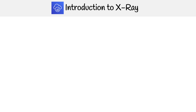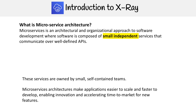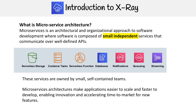To understand X-Ray, we need to understand what microservices are. Microservices is an architectural or organizational approach to software development where software is composed of small, independent services that can communicate over well-defined APIs. These are services owned by small and self-contained teams. Microservice architecture makes apps easier to scale and faster to develop, enabling innovation and accelerating time to market for new features. If you're using AWS and a host of different services, you might already be using microservice architecture.